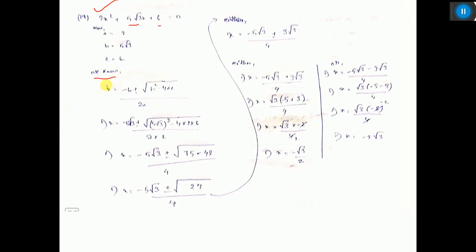Now I apply Sridharacharya formula: x equal to minus b plus minus root over b square. This is b square minus 4ac by 2a.